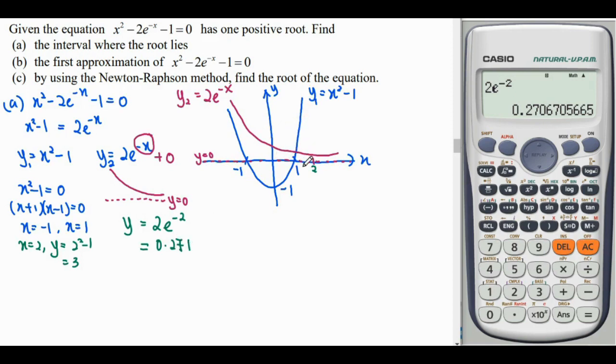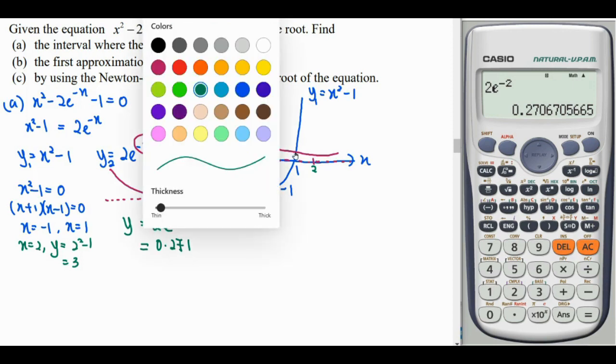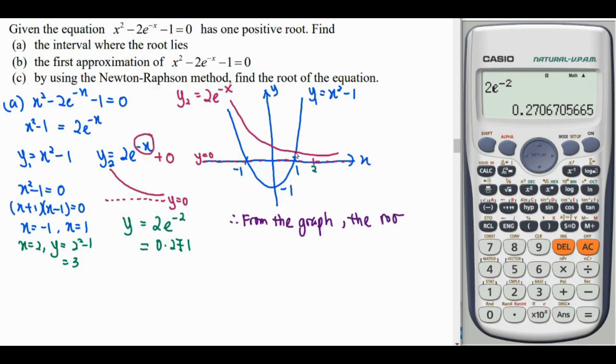So from here, we can notice that the intersection of the graph has happened. So from the graph here, we conclude that the axis of roots for this non-linear equation is in the interval from x = 1 until x = 2. So it is in the interval (1, 2).